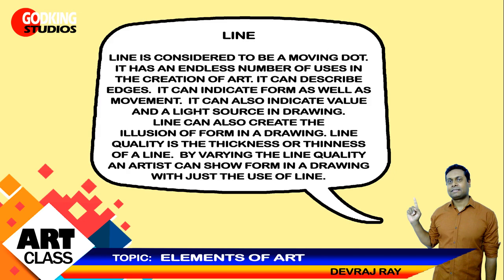Line. Line is considered to be a moving dot. It has an endless number of uses in the creation of art. It can describe edges, indicate form as well as movement, and also indicate value and a light source in drawing. Line can also create the illusion of form in a drawing. Line quality is the thickness or thinness of a line. By varying the line quality, an artist can show form in a drawing with just the use of line.